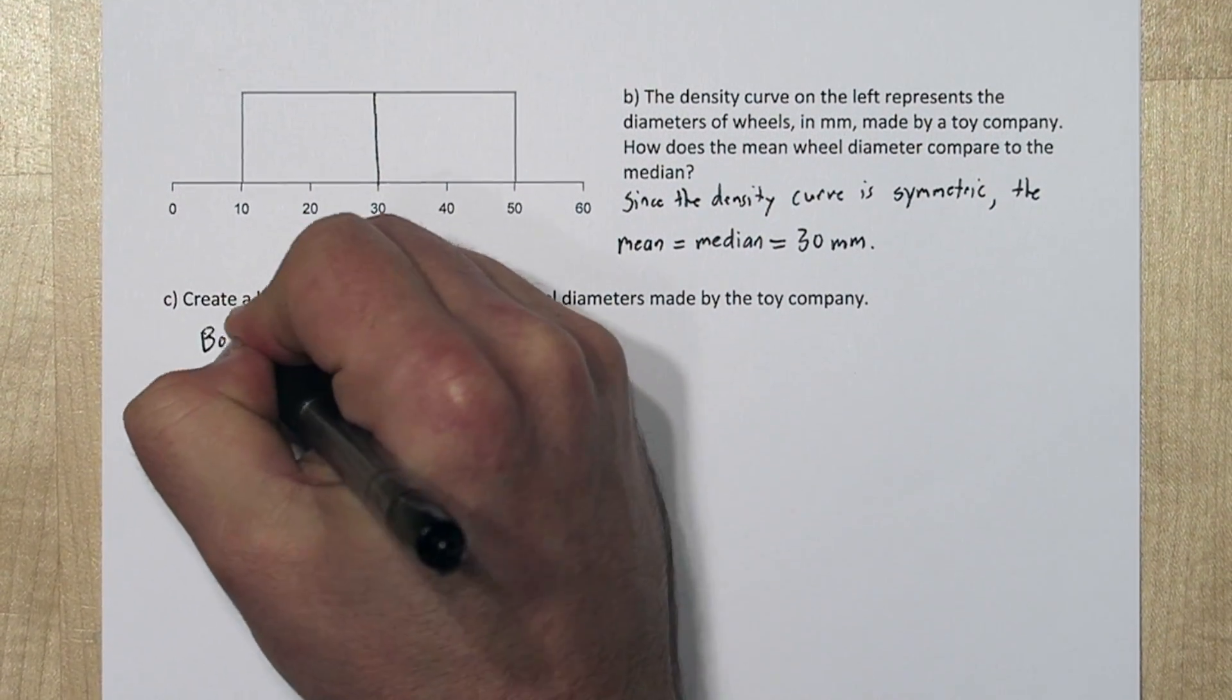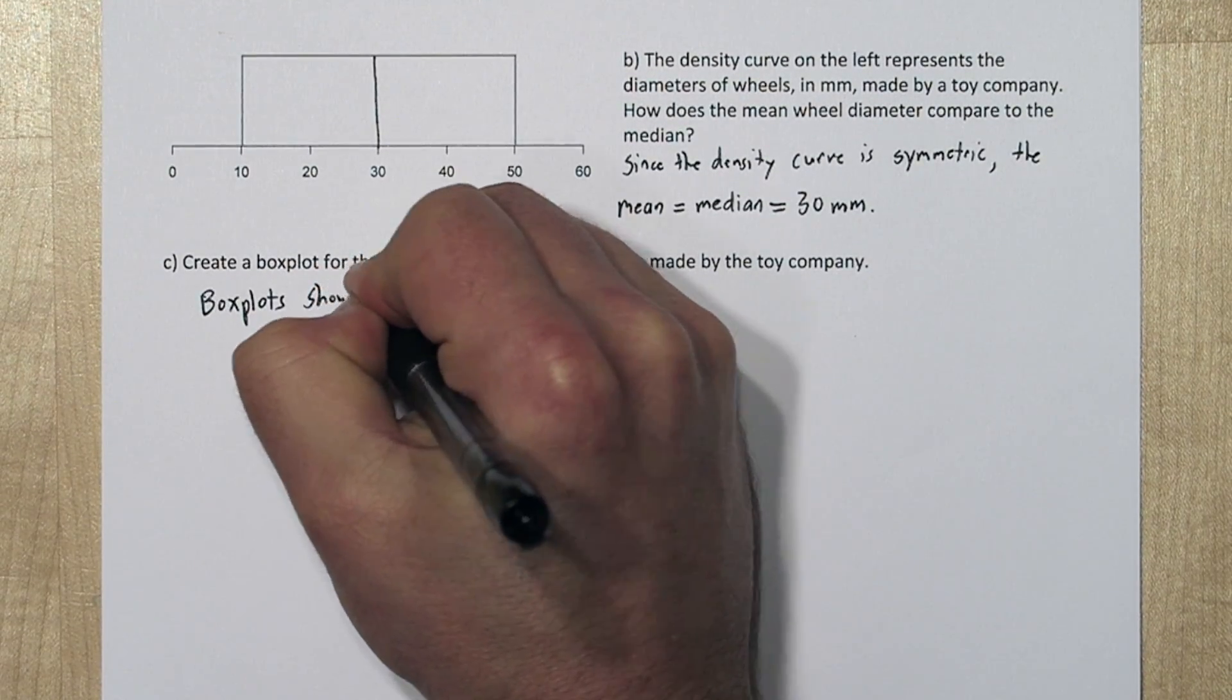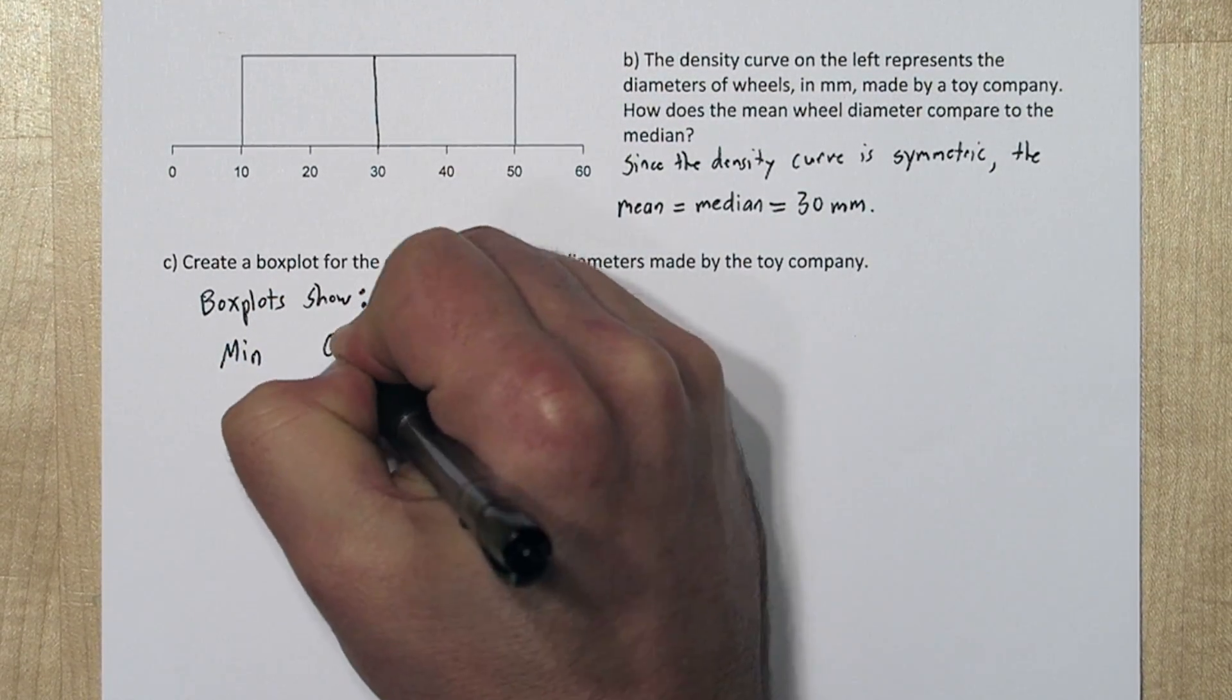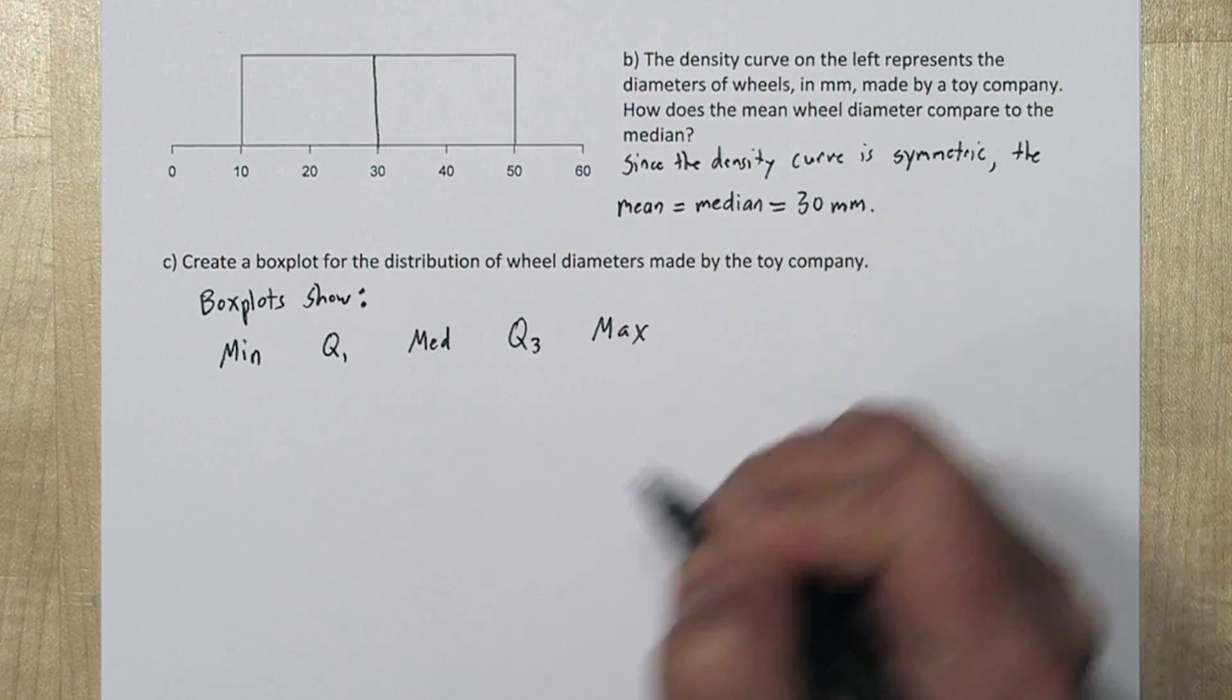Now a box plot is a graphical display of the five number summary: the minimum, quartile 1, median, quartile 3, and maximum.